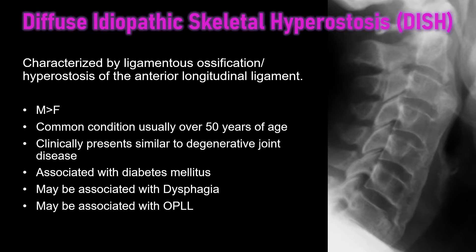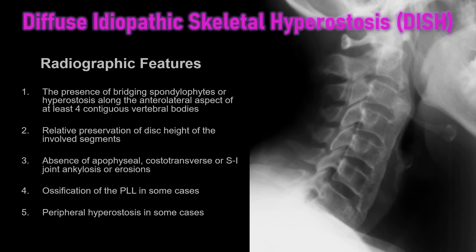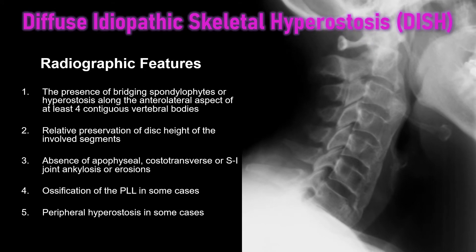There can be clinical symptoms of dysphagia with difficulty swallowing, and there are also cases of ossification of the posterior longitudinal ligament which may have neurologic complications associated with it. On an x-ray, the most common radiographic features of DISH are: flowing hyperostosis of three or more contiguous segments, relative preservation of the intervertebral disc height, and absence of posterior element fusion. We'll go through each of these findings closely.